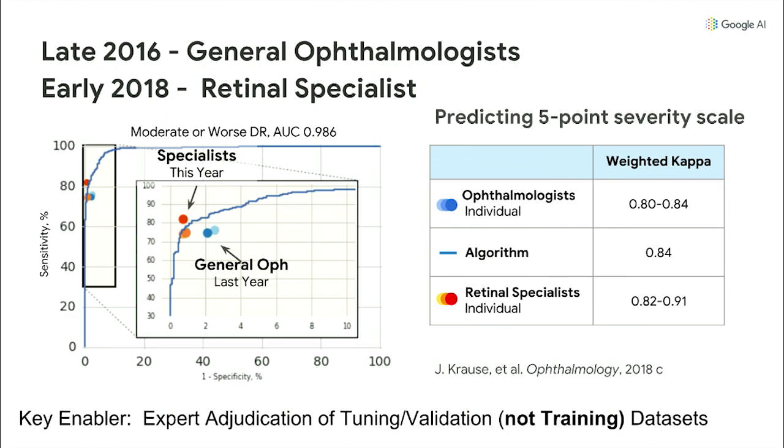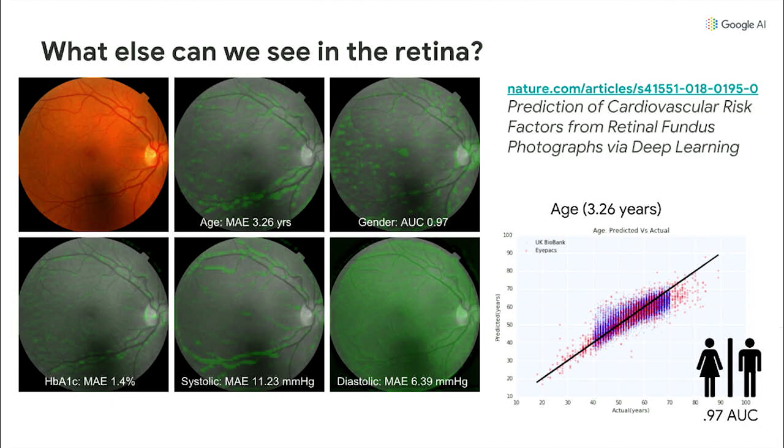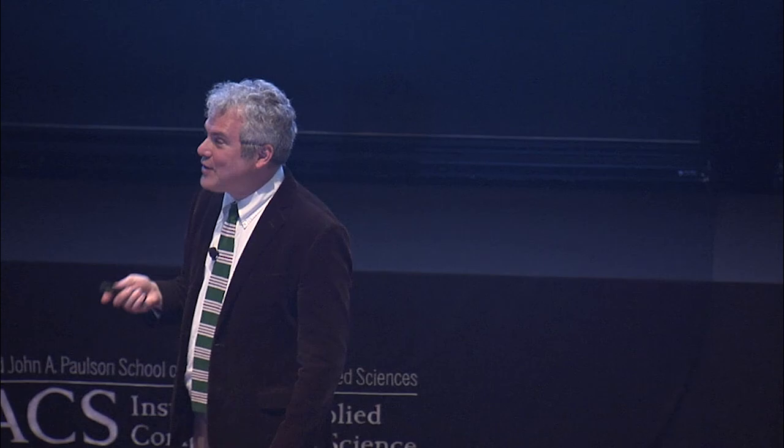After we could do DR, we said, well, what else can we see? The fundus is beautiful — it's the one place in the body where you can cheaply image both the vasculature and the neurons. A young woman who had recently graduated undergrad wanted to help, so we said, see if you can predict sex. There's nothing in the literature saying male and female retinas are different. She came back two or three weeks later and said, yeah, I can predict that — with an AUC of about 97%. Interestingly, the prediction does not localize to any one spot in the image.